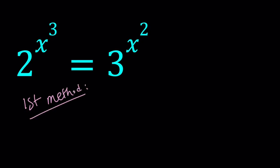So for my first method, I'm going to ln both sides of this equation. So if you ln 2 to the power x cubed, that equals ln 3 to the power x squared.